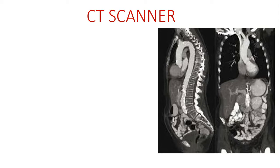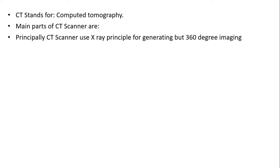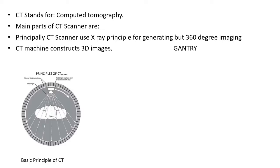The next type of modality is the CT scanner. CT stands for computed tomography — it gives us two-dimensional or sometimes three-dimensional cross-sections of images without doing any actual physical intersection. The CT machine constructs 3D images using an internal X-ray device with 360-degree imaging. There is a circular part around the patient called the gantry.